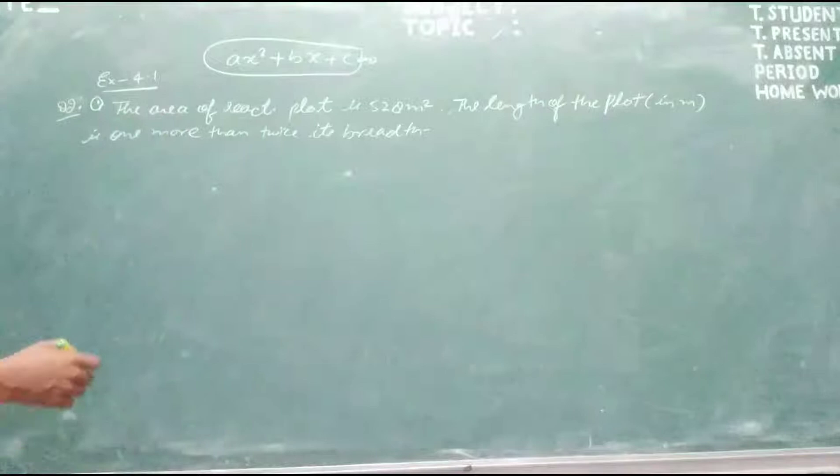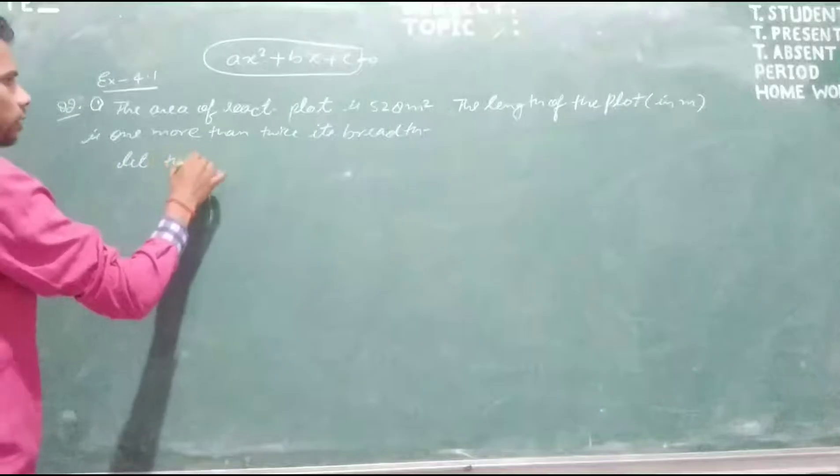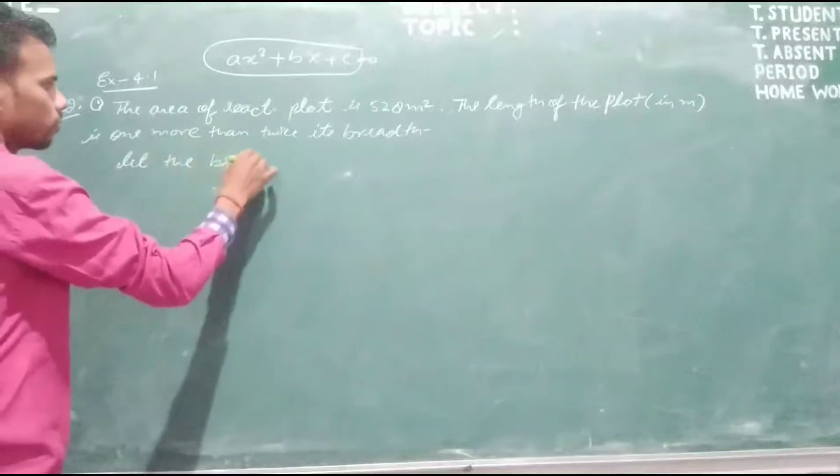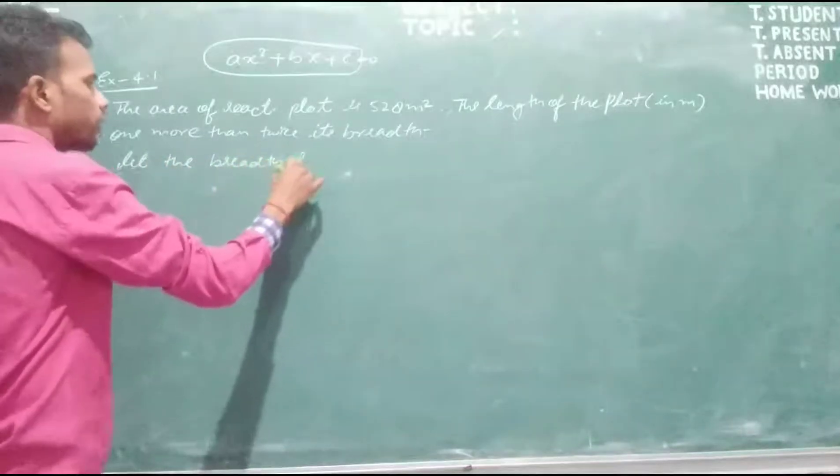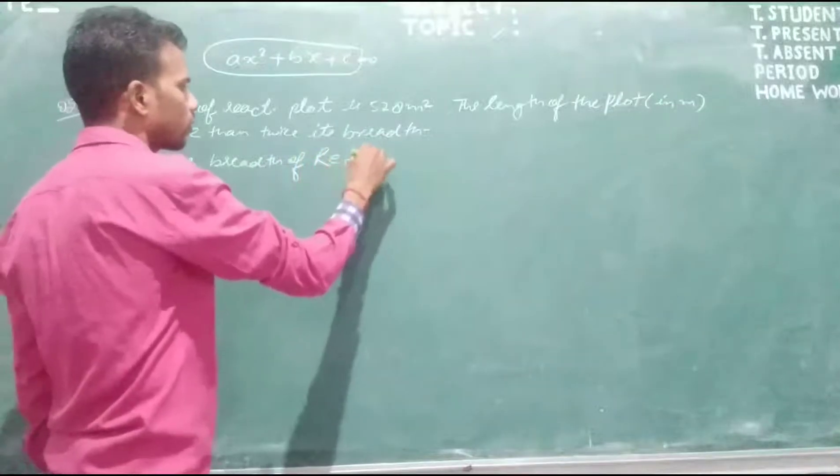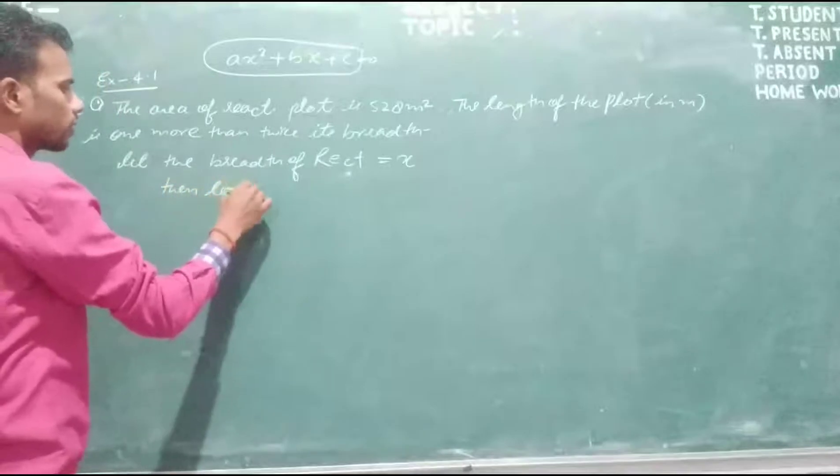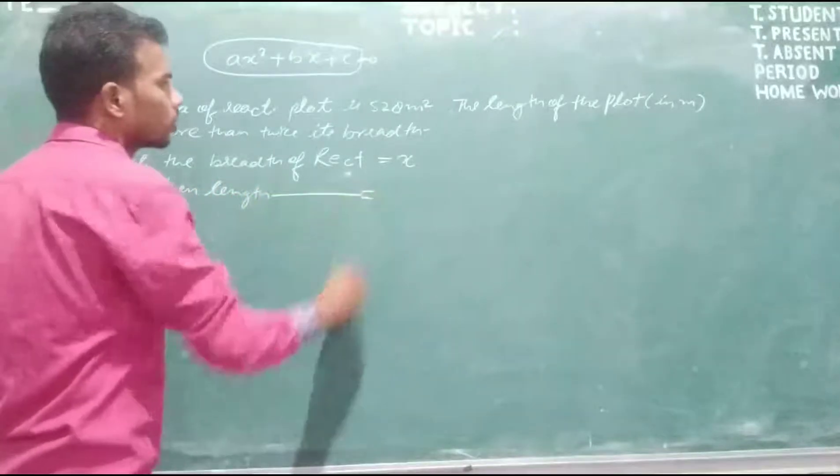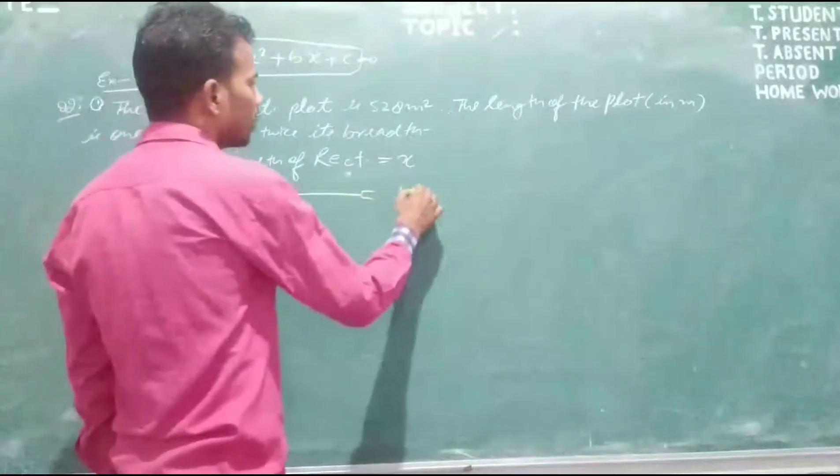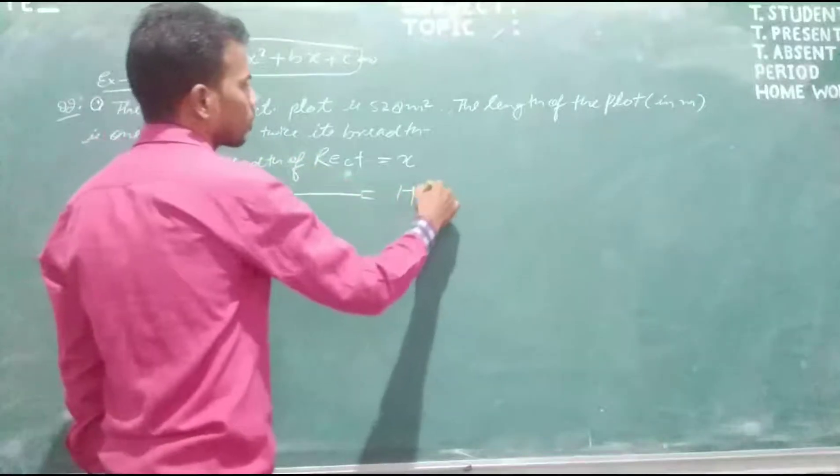Here, the length of the plot is one more than twice its breadth. So, let the breadth of the rectangle be X. Then, the length becomes one more than twice the breadth.